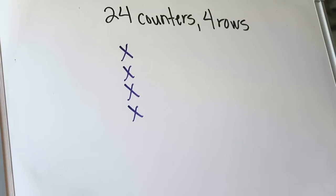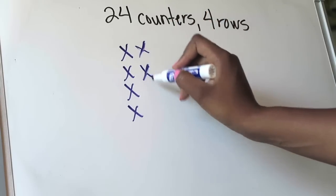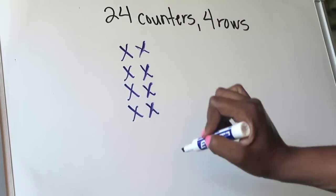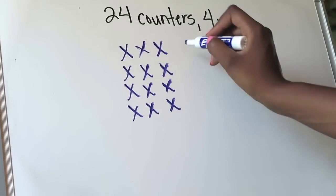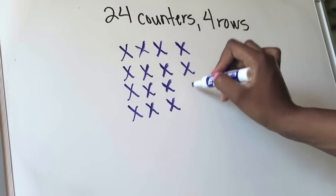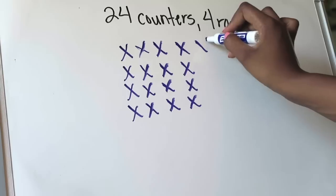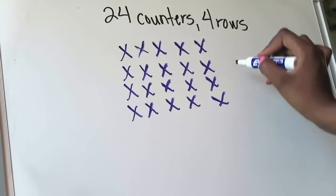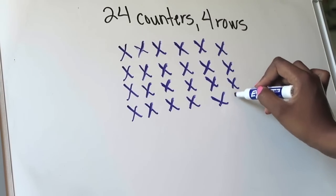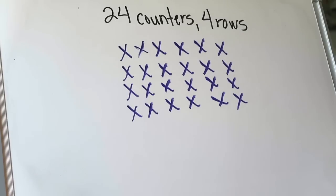I also need to keep in mind that by establishing my four rows, I have placed four out of the 24 counters. So I'm going to continue to count from there, going one row at a time, placing one counter at a time. That's four, five, six, seven, eight, nine, ten, eleven, twelve, thirteen, fourteen, fifteen, sixteen, seventeen, eighteen, nineteen, twenty, twenty-one, twenty-two, twenty-three, and twenty-four. So I have successfully arranged 24 counters into four rows.